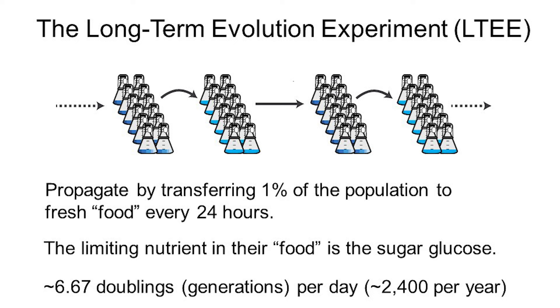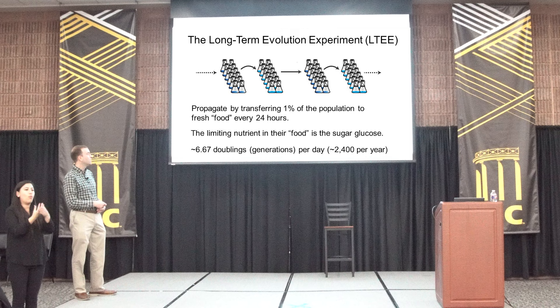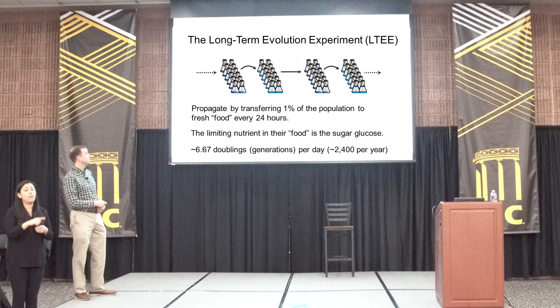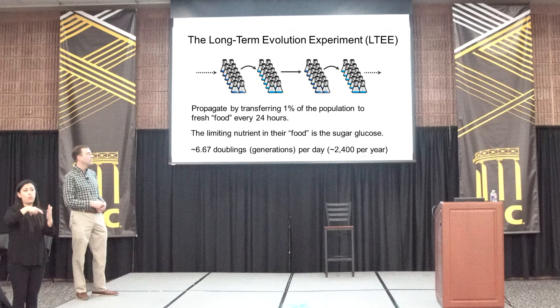We transfer one one-hundredth of the population each day. They get fed, wake up from their stupor of not growing, grow for a little while - in fact, they're done growing in about six, seven, eight hours - and then sit there for the rest of the 24 hours. The log base two of a hundred means there are about 6.67 doublings of all the cells during that time, which is the number of generations passing each day. If you do that every single day for a year, you get about 2,400 generations to pass under these conditions.